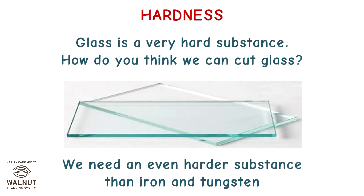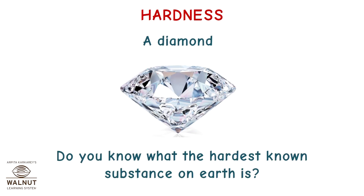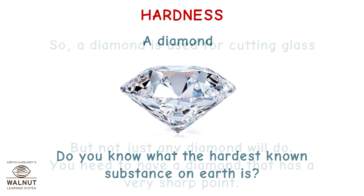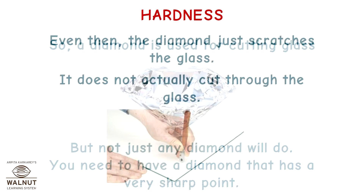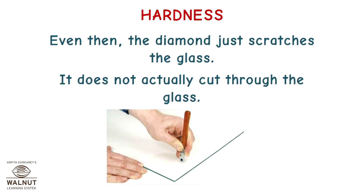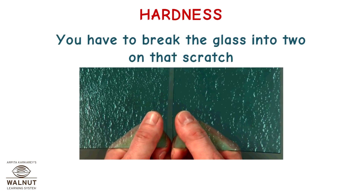Glass is a very hard substance. How do you think we can cut glass? We need an even harder substance than iron and tungsten — a diamond. Do you know what the hardest known substance on earth is? A diamond is used for cutting glass, but not just any diamond will do. You need a diamond that has a very sharp point. Even then, the diamond just scratches the glass — it does not actually cut through the glass. You have to break the glass into two along that scratch.